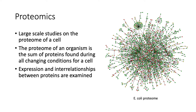Next, let's talk about proteomics. These are large-scale studies on the proteome of a cell — the sum of proteins found across all changing conditions for a cell — and in proteomics, the expression and interrelationships of these proteins are examined. Here we have an example of an E. coli proteome, where each dot corresponds to a different protein and the lines connecting them represent interactions between the various proteins, showing a very complicated relationship.